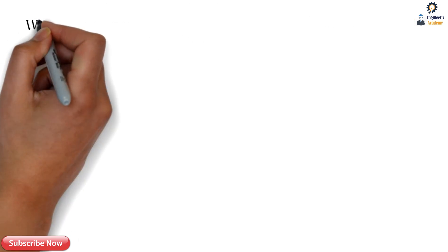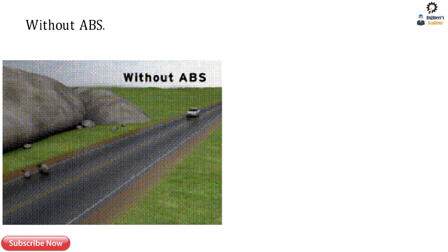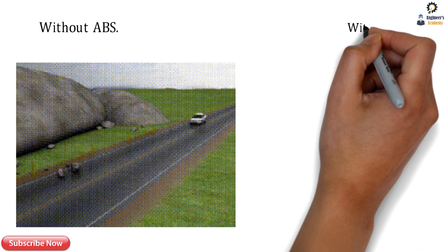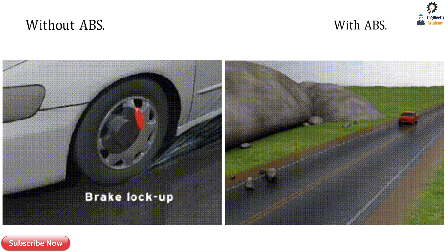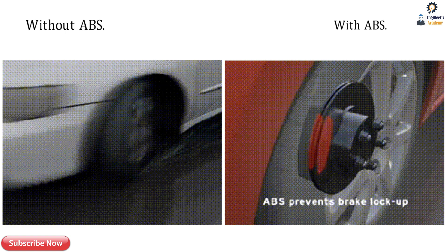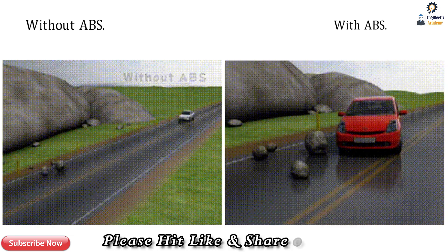There are two scenarios: without ABS and with ABS. Without ABS, when we apply pressure on the brake pedal, the wheel gets locked up — the brake locks up, the wheel stops, and the vehicle deviates from its straight line. With ABS, when we apply pressure on the brake pedal, the system applies and then releases the pressure, preventing wheel lock-up.